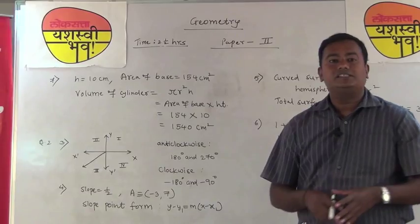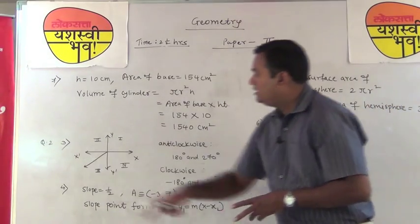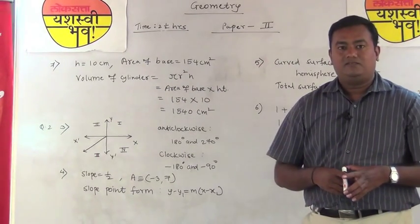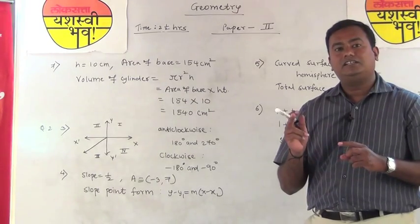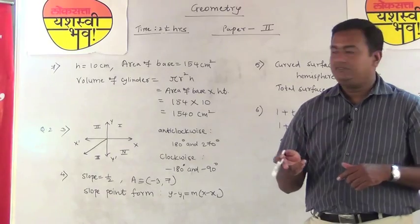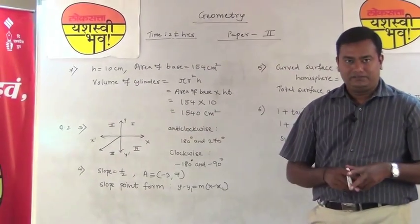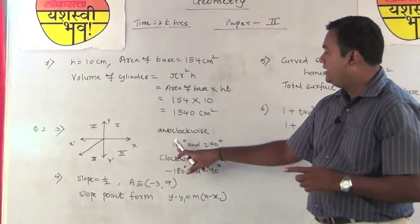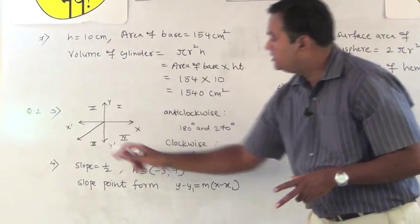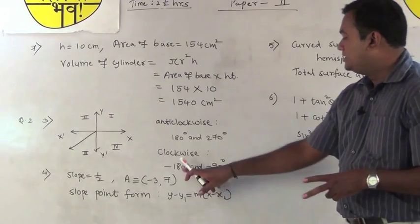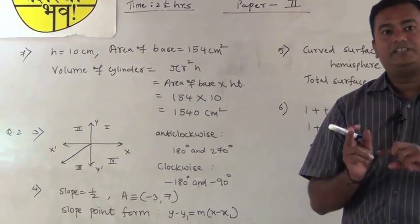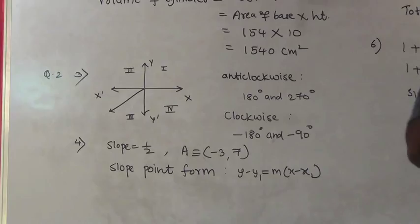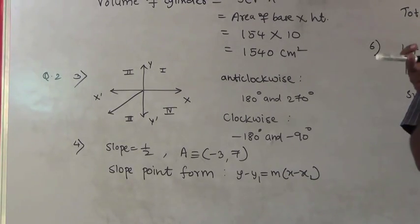For question 2, one question is about a standard angle in terminal position where the terminal arm is in quadrant 3. If the initial arm is rotated anticlockwise, the angle is positive, and the measure is between 180° and 270°. If rotated clockwise, the angle is negative, and the measure is between −180° and −90°. Write both positive and negative values, and don't forget to mention the direction.